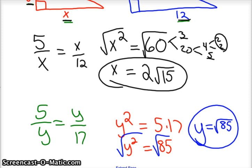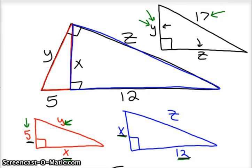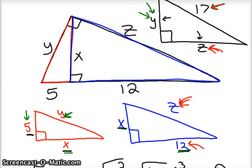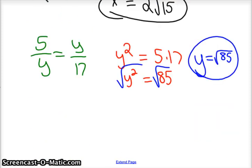So the last thing to find is Z. So we need to just go back. Look for where our Z's are located. And we're located here and here. And so we're only dealing with the blue and the black triangle. And so this Z goes with this 17. And this Z goes with this 12. So those are the corresponding parts. So it doesn't matter if you go black to blue, blue to black. 17 over Z equals Z over 12.